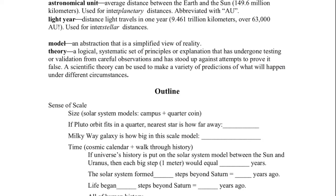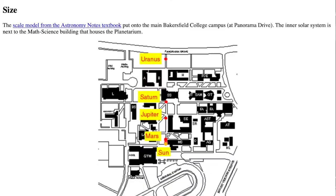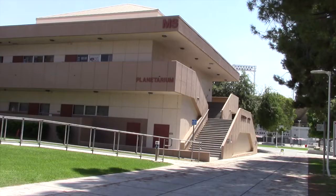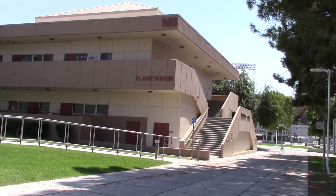The second set of terms is for the scientific method part of the lecture. Below the vocabulary terms is the actual outline for the lecture. This picture shows where the first seven planets would be if you were to put the size scale model from the Astronomy Notes Chapter 1 onto the BC main campus at Panorama Drive. The four inner planets are all right next to the math science building that houses the planetarium.